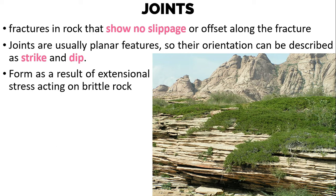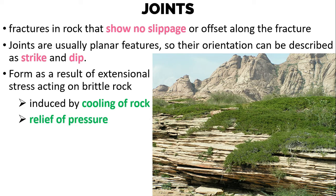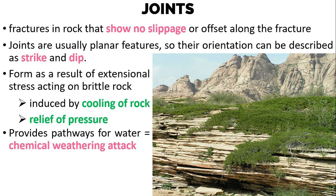Joints form as a result of extensional stress acting on brittle rock. Such stresses can be induced by cooling of rock, meaning volume decreases as temperature decreases, or by relief of pressure as rock is eroded above, thus removing weight.